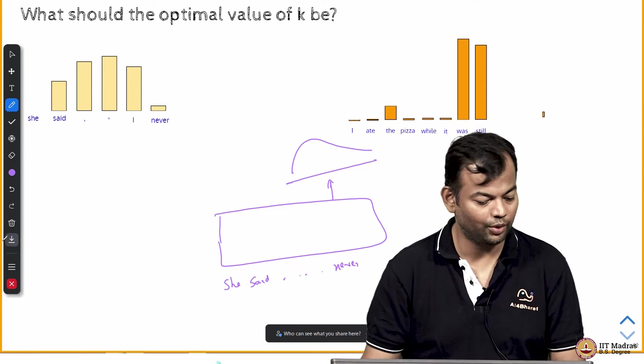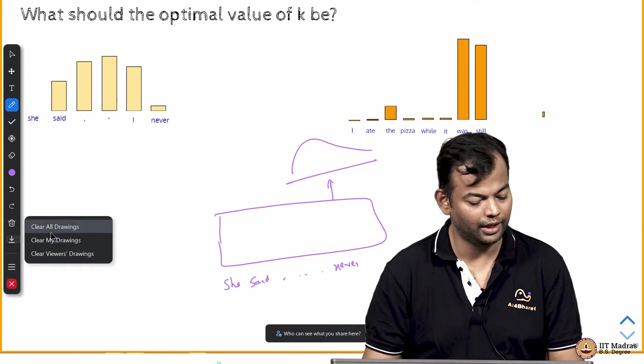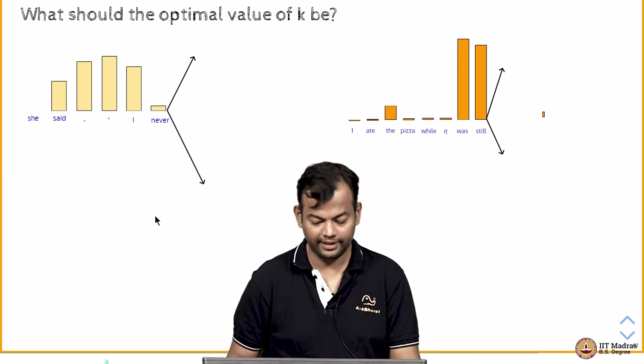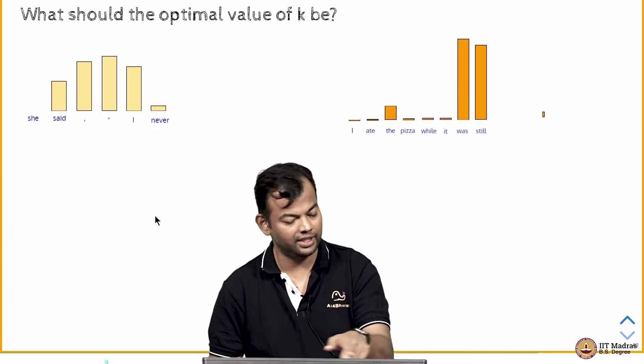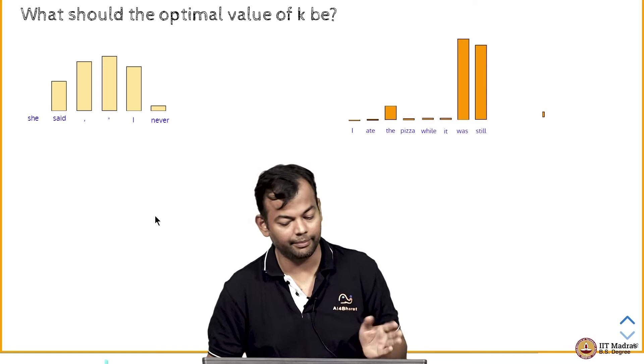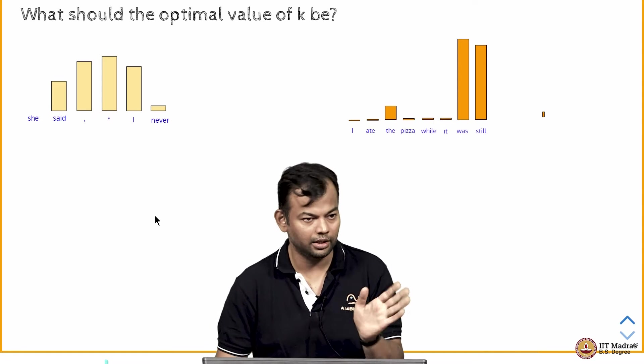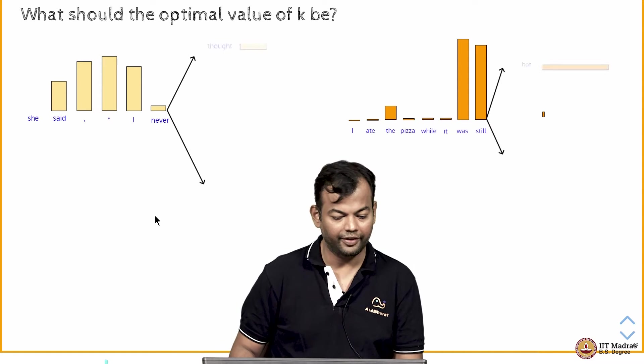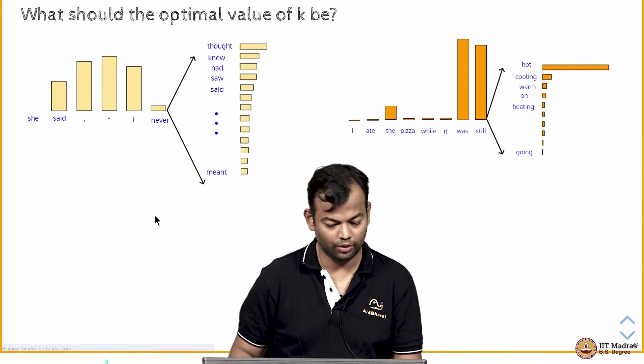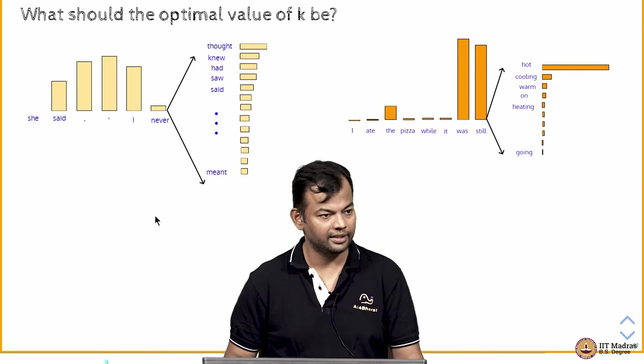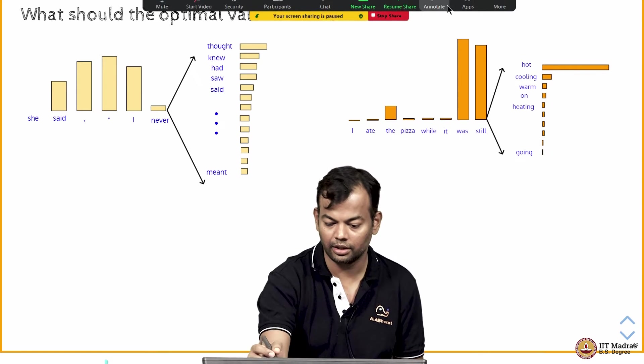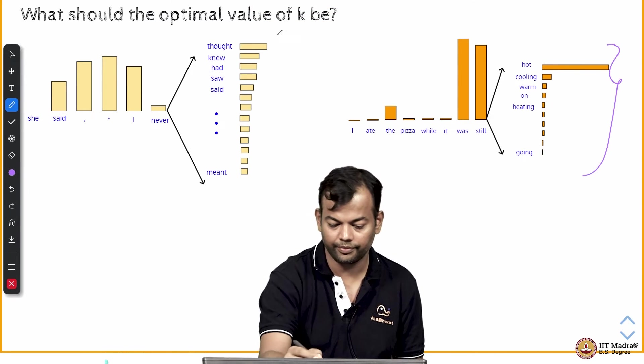Now, the question that we are trying to answer is what is the optimum value of K? I'm taking two examples together. One was she said I never, let us look at another example: I ate the pizza while it was still something. Then in the first case this is what the distribution looks like, and in the second case the distribution looks like this.